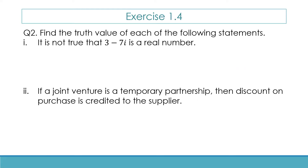Find the truth value of each of the following statements. We have to find the truth value of each statement, and here it will be a mix of all the possible connectives. The first one is: it is not true that 3 minus 7i is a real number. Let us express this symbolically. Here, P is the statement that 3 minus 7i is a real number.